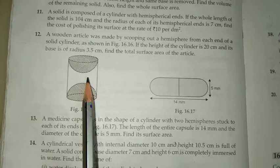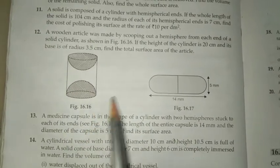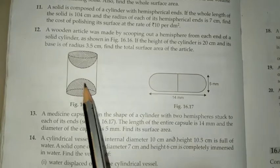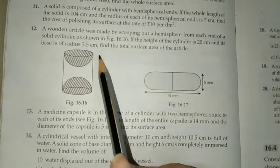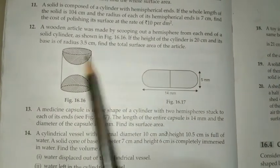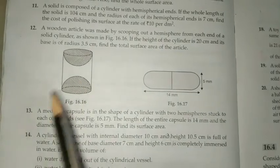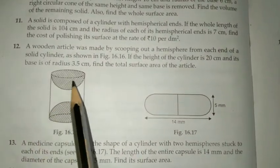Now, a wooden article was made. So, this is the end of the lecture. We have to find the total surface area. Again, over here, the surface area is a different way.